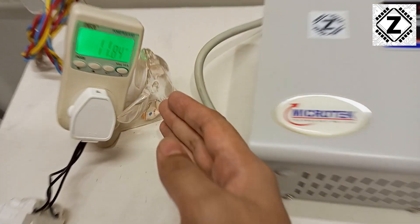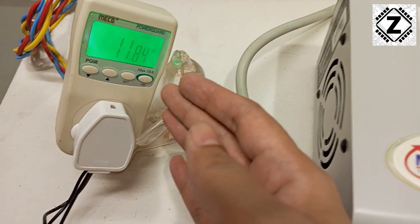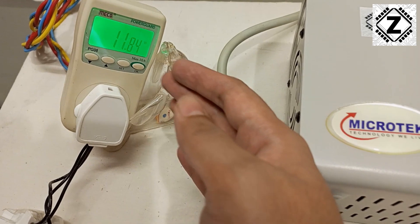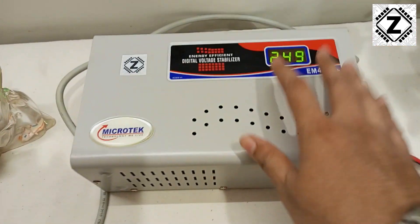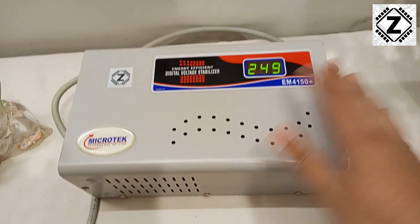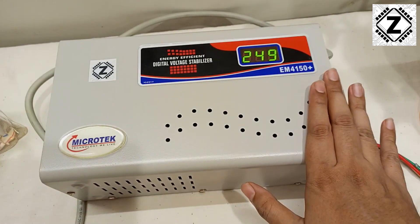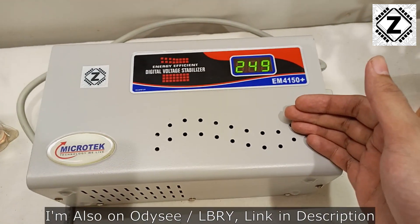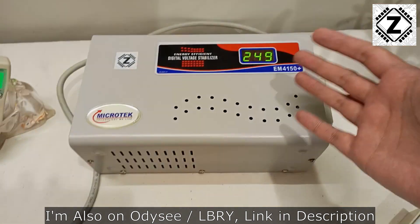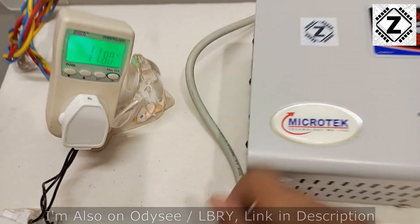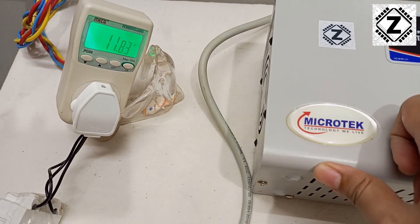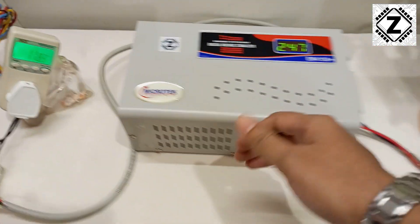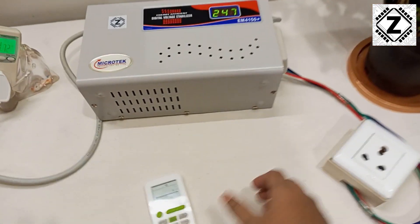How much power does it need to stay alive? As good as 12 watts. We can say that somewhere between 10, 15, or 20 watts your stabilizer is going to consume depending on the model. This is a regular model which is usually intended for 1.5-ton AC.